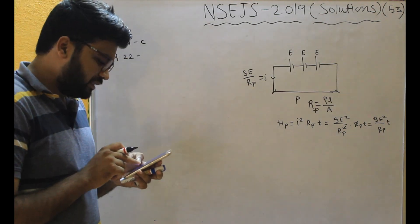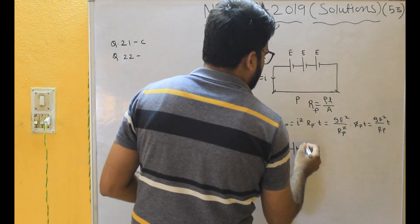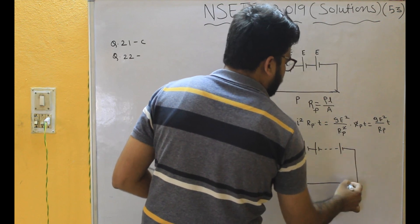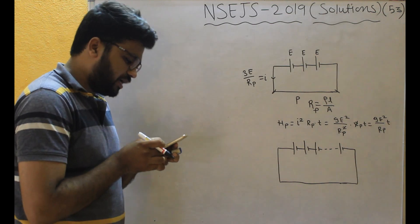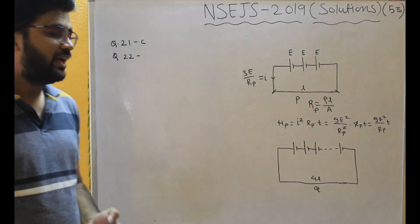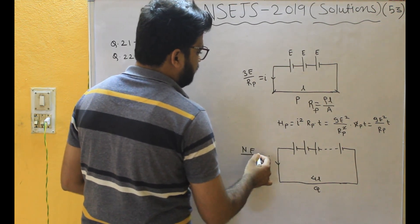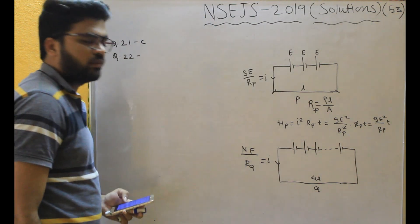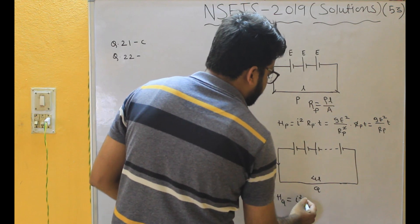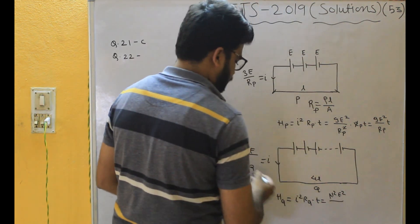The circuit is now modified by replacing P with another wire Q and N identical cells. N identical cells are connected to wire Q. Wire Q has the same diameter but is 4 times longer than wire P — so if P has length L, Q has length 4L. Current I = NE/R_Q. Heat generated in Q: H_Q = I²·R_Q·T = N²E²/R_Q · T.